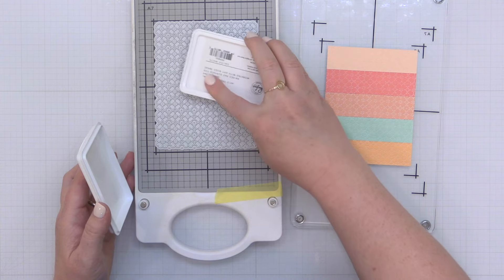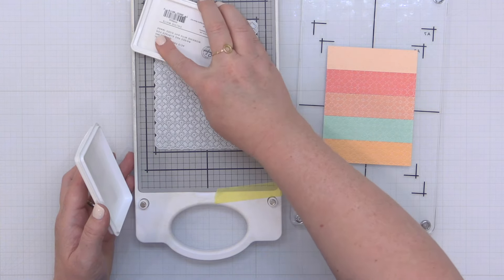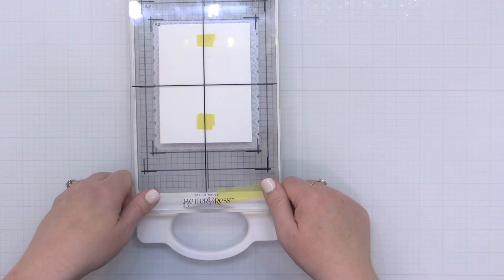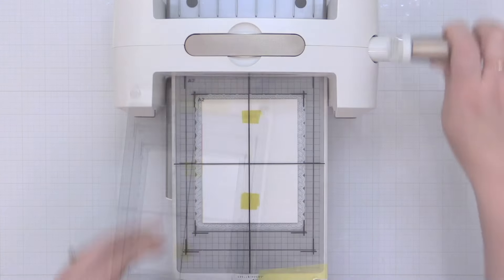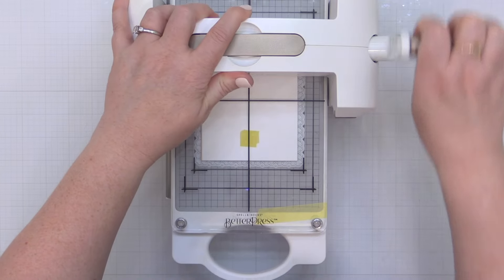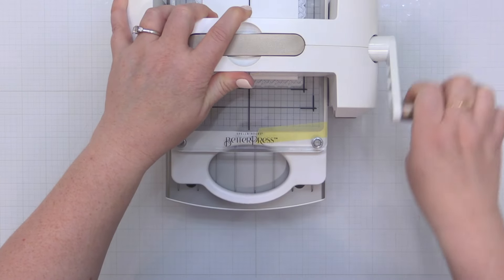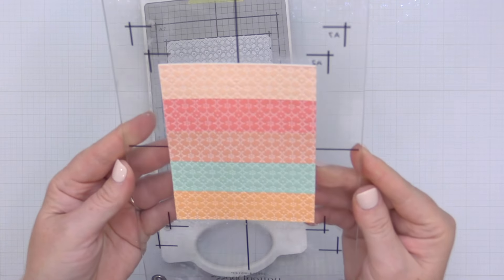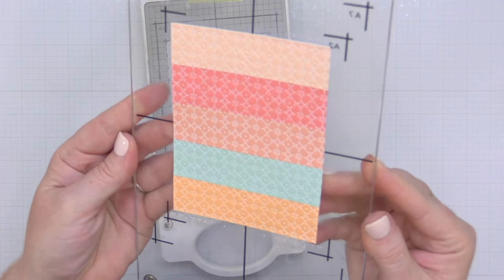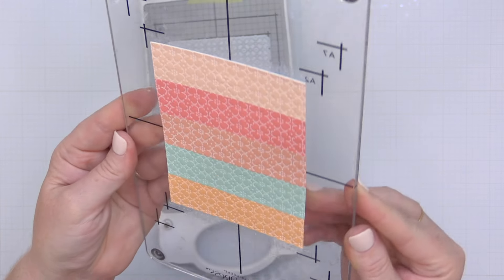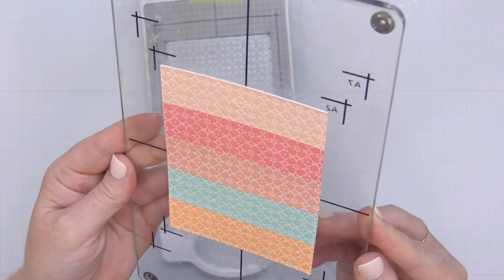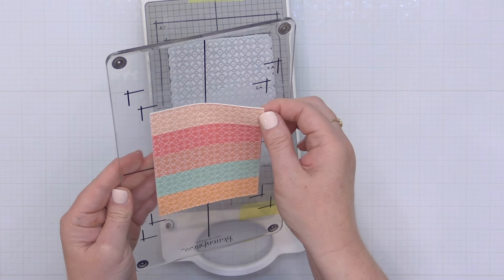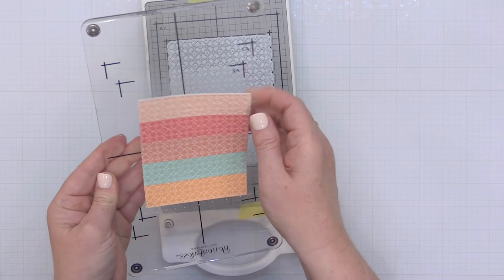So without moving anything I'm going back in and I am re-inking my Dotted Petals press plate. I'm replacing the platen onto the chase and then running that back through my Platinum 6 die cut machine. Now because I have that magnetic mat taped into place and because I didn't touch my plate as far as moving it around I'm able to repress this piece of cardstock and get a really bright white vibrant image onto this colored cardstock.